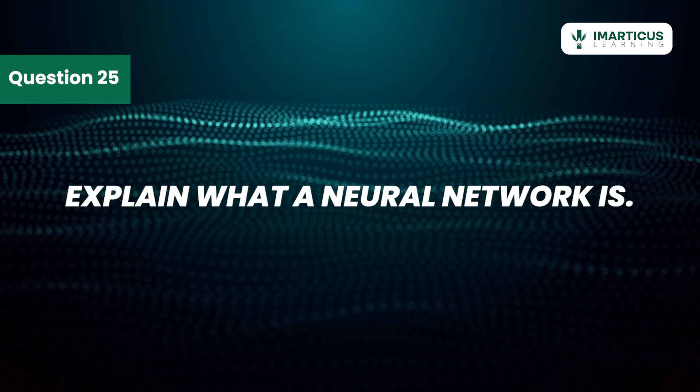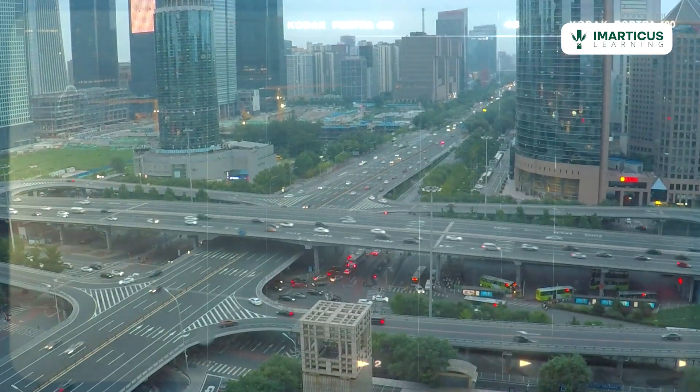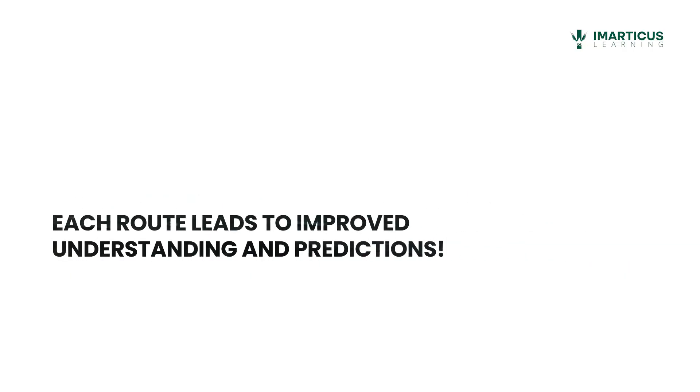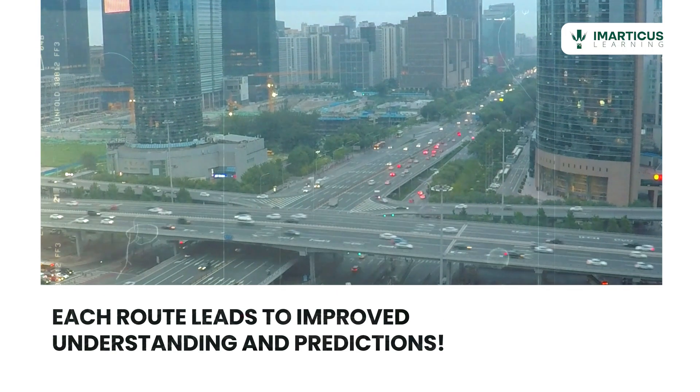Explain what a neural network is. A neural network mimics the way our brain works, consisting of interconnected nodes. Each connection has a weight that adjusts as the network learns. It's like building a complex highway system where each route leads to improved understanding and predictions.